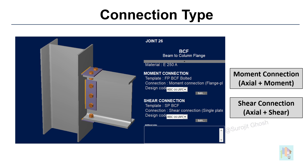For connection design, we need to assign a template to a joint — for example, a side plate connection template or a flange plate connection. The design is then based on that template.